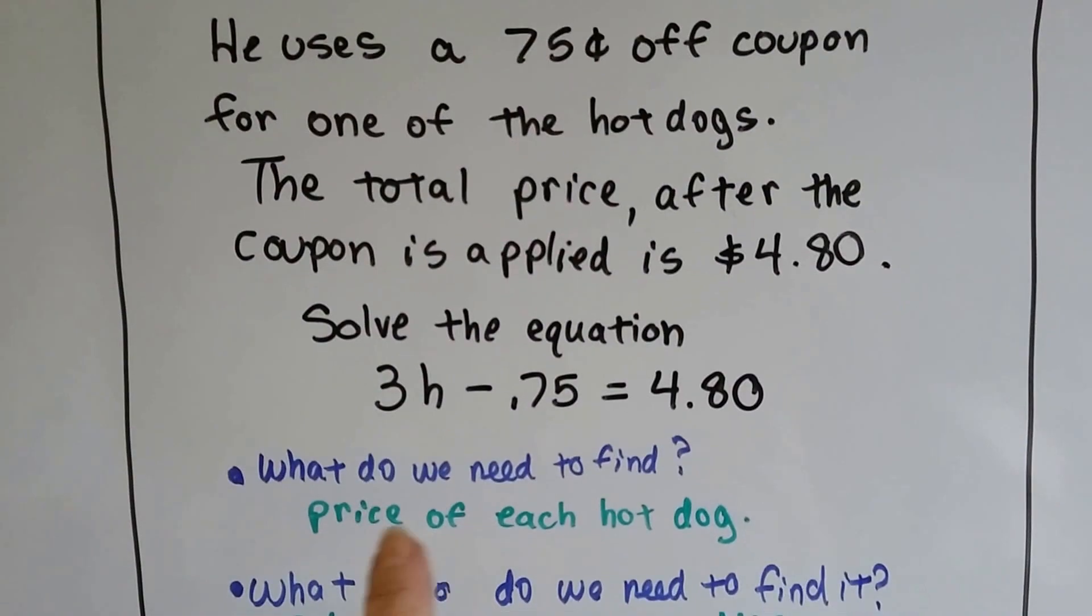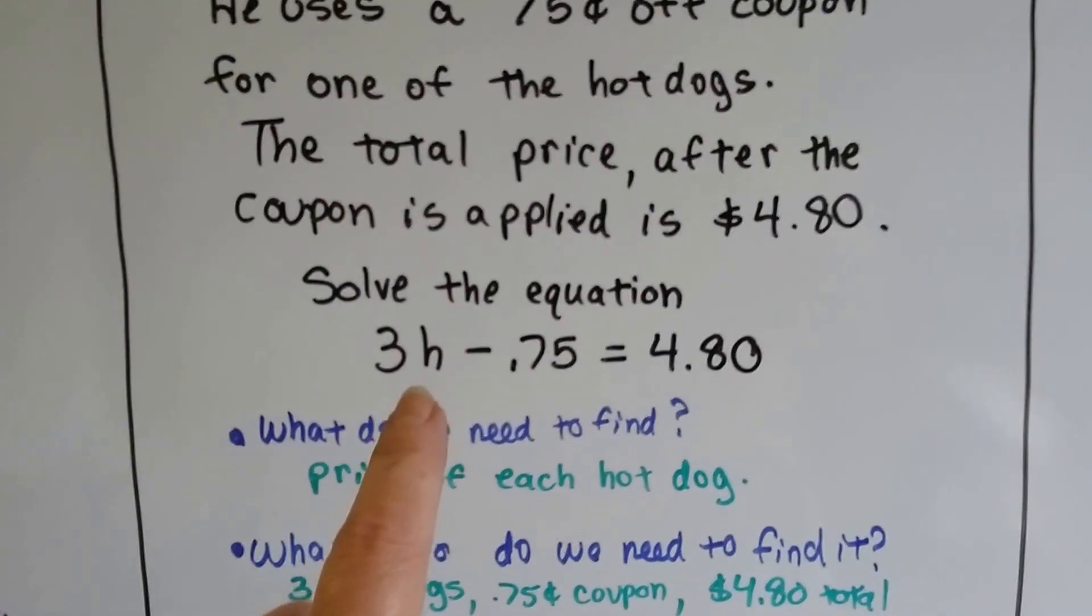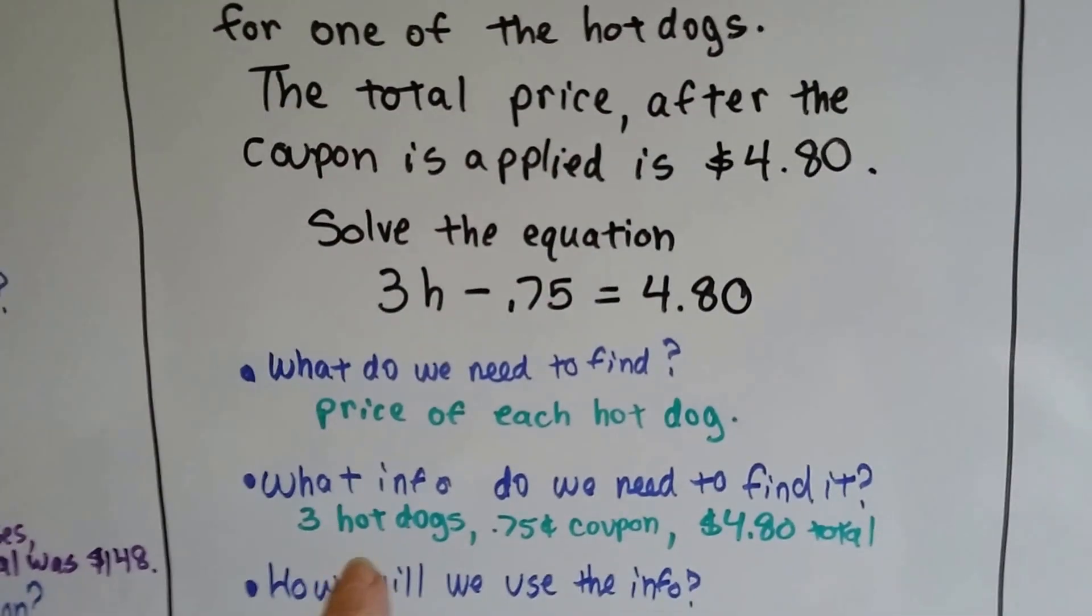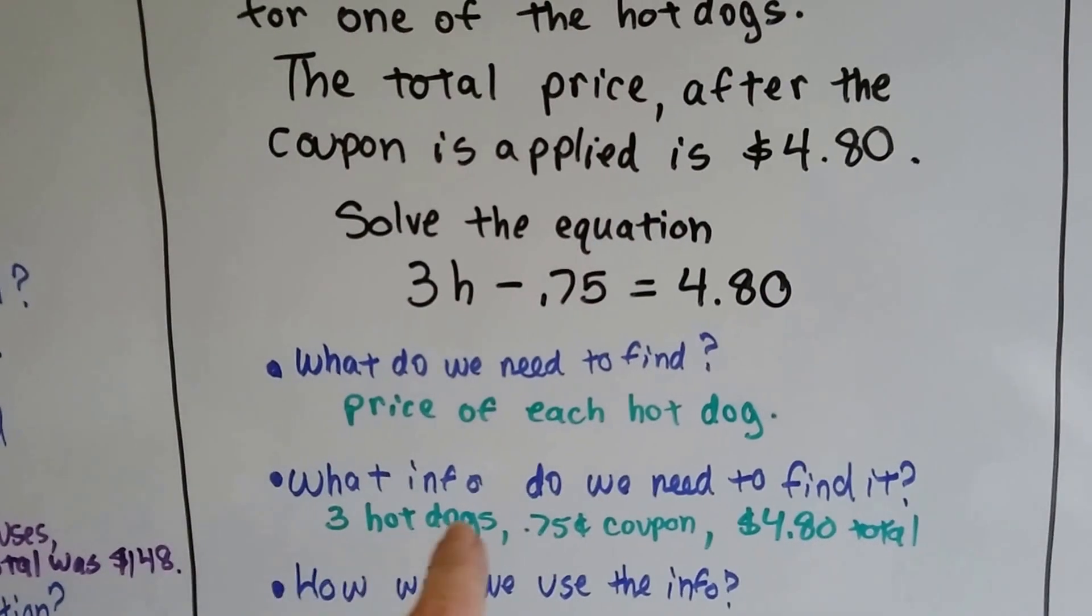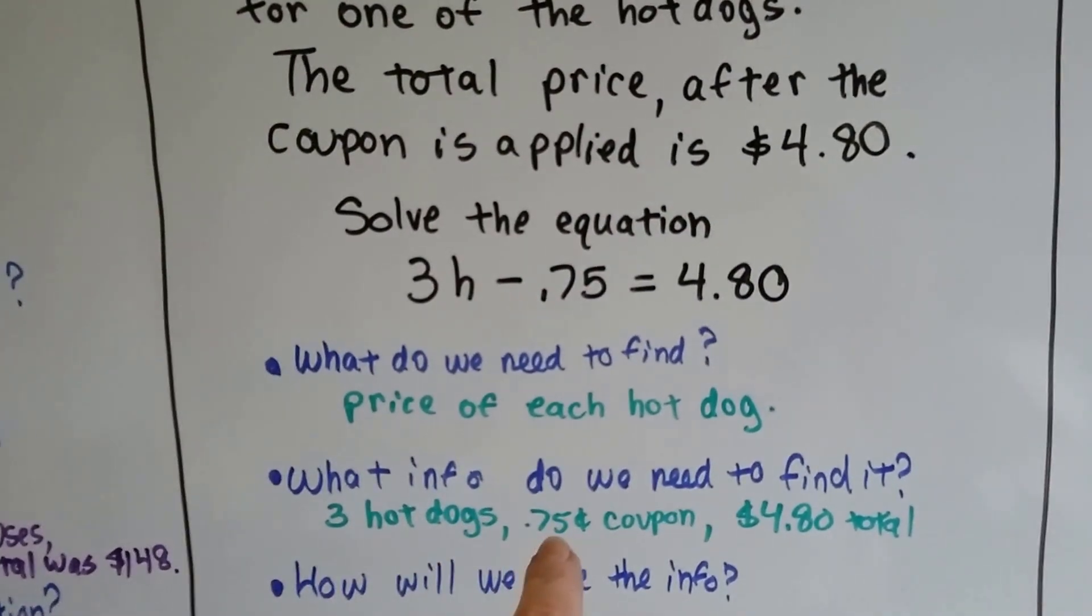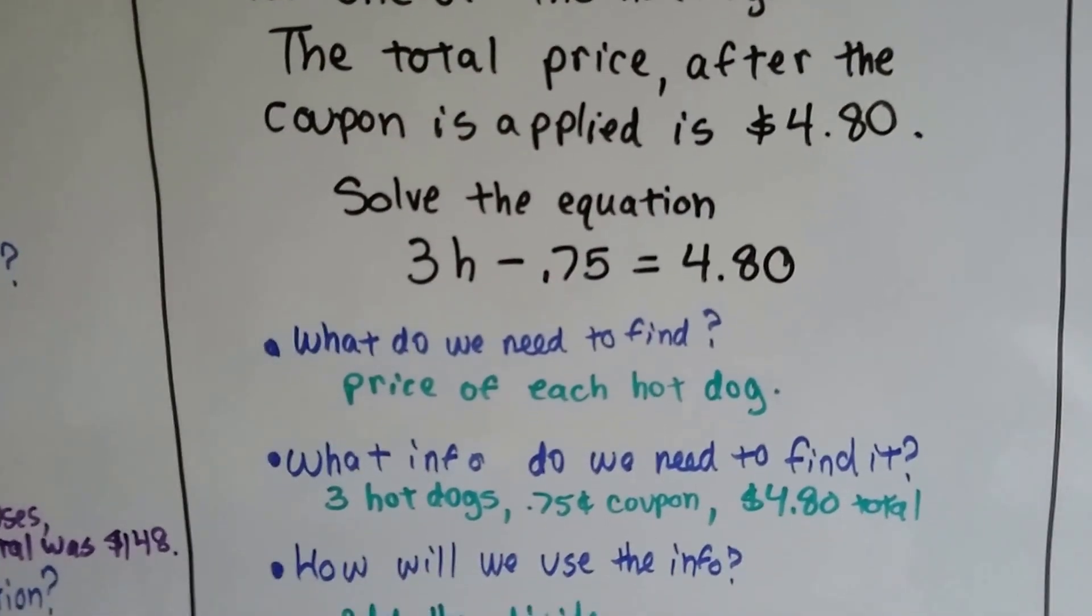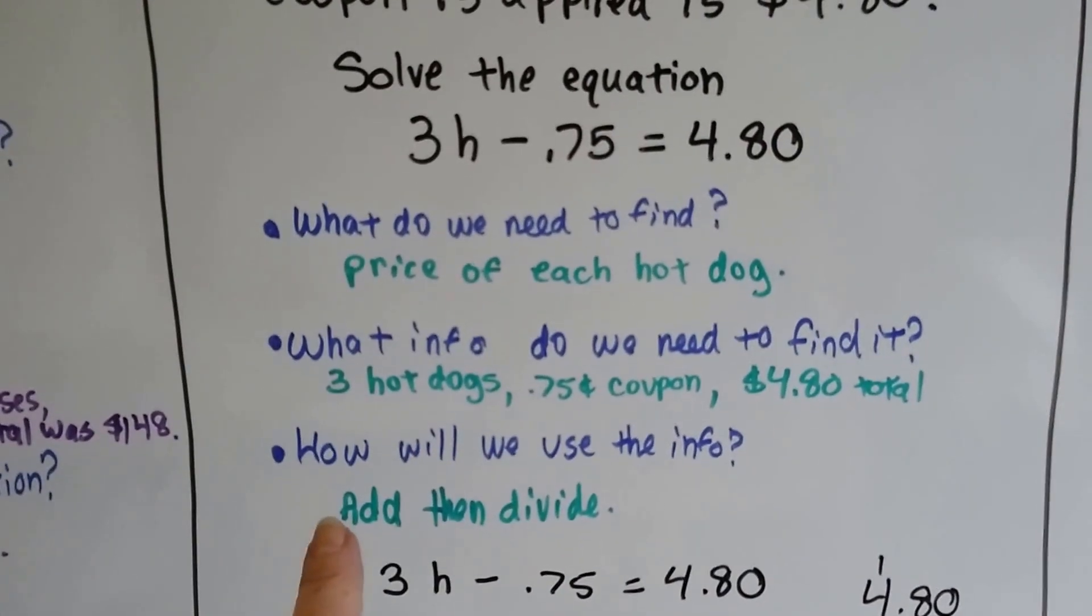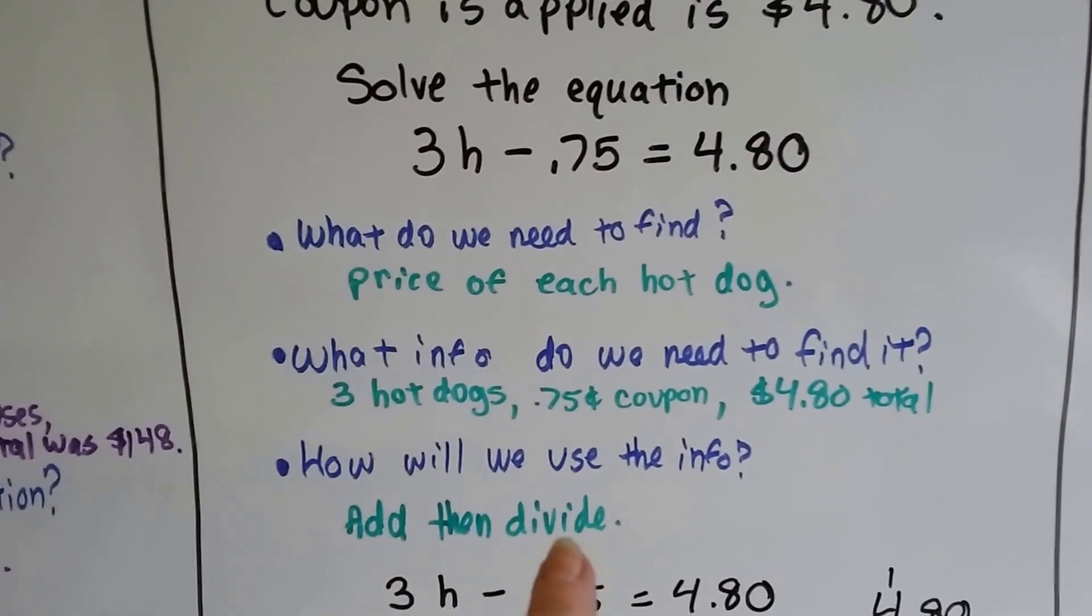So what do we need to find? We need to find H, the price of each hot dog. What info do we need to find it? That there were 3 hot dogs, that there was a $0.75 coupon, and that the total was $4.80. And how are we going to use it? We're going to add and then divide.